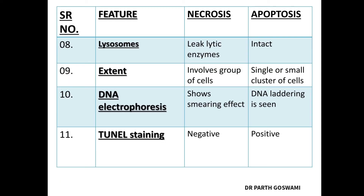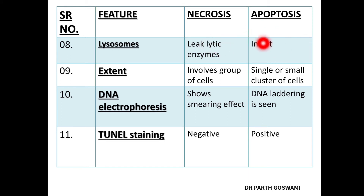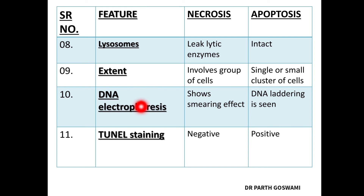In necrosis, cellular content is digested by lysosomes and released out of the cell, but lysosomes are intact in apoptosis. Necrosis usually involves a group of cells, while apoptosis can involve a single cell or a small group or cluster of cells.